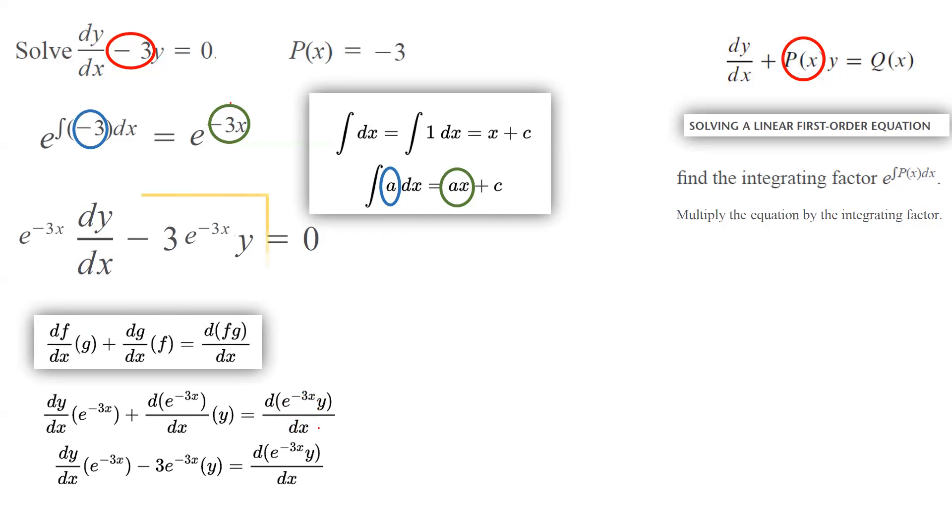So we can write this in compact form. The compact form is d/dx of e to the power negative 3x times y. And on the right-hand side, you have 0.